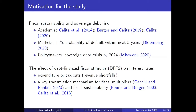Why is it interesting to tie this into fiscal sustainability? The effect of debt on the interest rate is a key transmission mechanism for fiscal multipliers, which dominates the fiscal literature. By affecting interest rates it also has an effect on fiscal sustainability. A lot of the discussion, especially in advanced economies, has been: don't worry too much about debt because interest rates are really low, so the cost of servicing that debt going forward means fiscal sustainability is less of a concern.